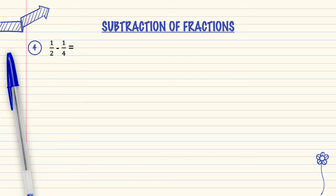Question number 4: 1 over 2 minus 1 over 4. As we can see, the denominator is different. So we must change the denominator to become the same number, then we subtract.